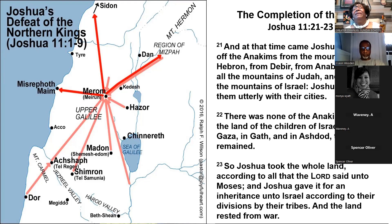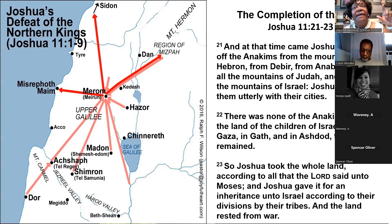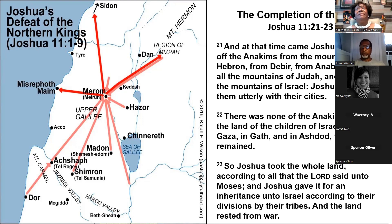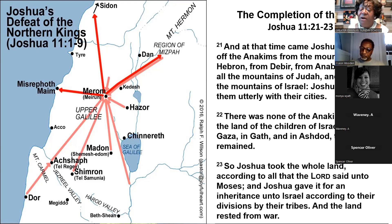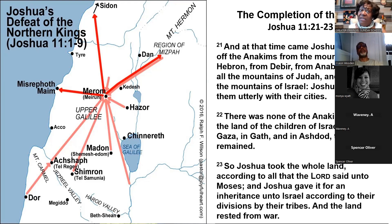When you recognize the authority of God, when you recognize that your very breath depends on whether he's going to give it to you or not, then your attitude changes and you recognize, 'Lord, I am nothing — you are everything.' So Joshua took the whole land according to all that the Lord said unto Moses. And Joshua gave it for an inheritance unto Israel according to their divisions by their tribes. And the land rested from war after seven years.